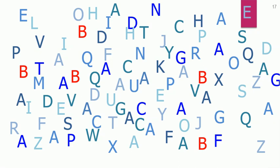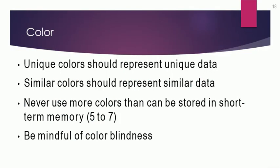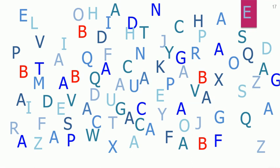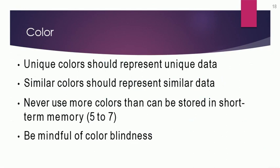We don't want to make coloring techniques more overwhelming than the other pre-attentive attributes. When talking about colors, we have to represent unique data with unique colors — different shapes, columns, and dimensions should each have a unique color, and similar data should have similar colors. For example, using red for variable B, blue for D, N, and A variables.